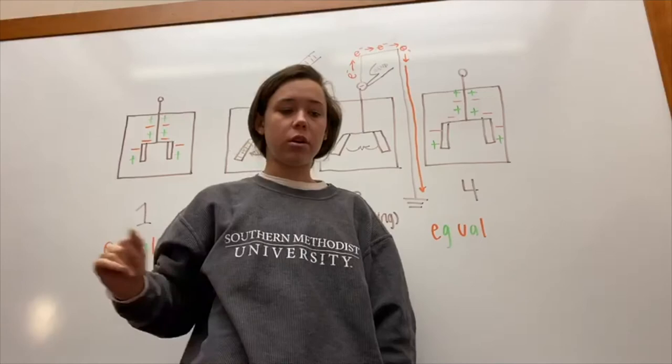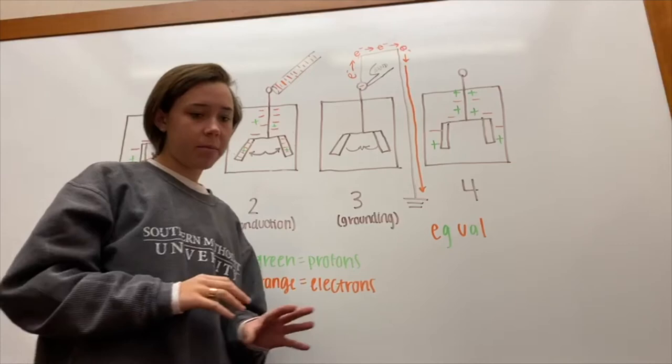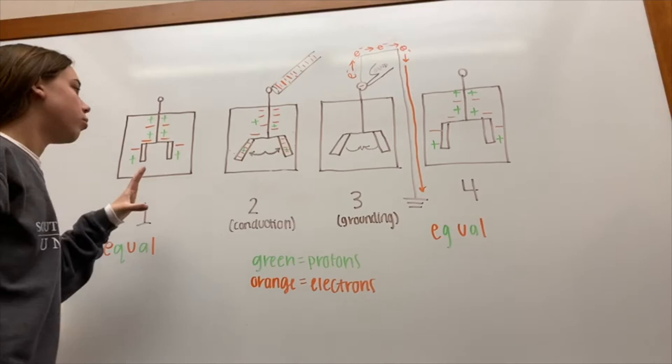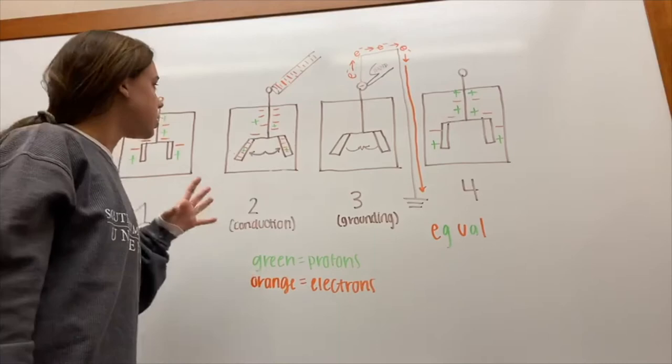By rubbing the fur and the PVC pipe, you have stage one: the electroscope that has an equal number of protons and electrons. Then when you rub the PVC pipe with the fur, you negatively charge the PVC pipe. When you bring that PVC pipe and touch it to the electroscope, the leaves will repel.